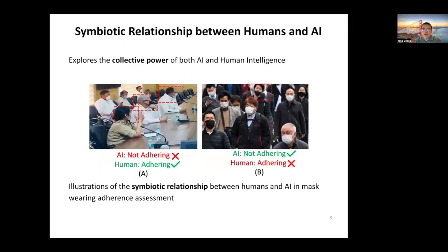Our paper is motivated by the observation of the symbiotic relationship between AI and human intelligence. More specifically, as shown in figure A, we observe that the AI model can mistakenly identify people who are not facing directly towards the camera as not adhering to the mask wearing policy.